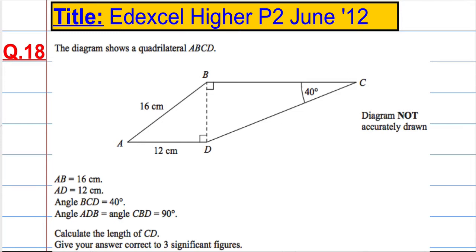Ultimately what we're trying to do is work out the length of this line. Within this triangle BDC, I've only got one piece of information, well I've actually got two, I've got two angles, but what I would like is to know the length of one of the sides.